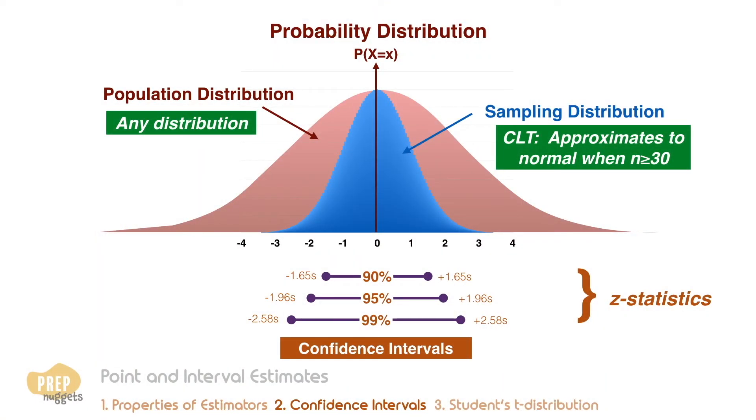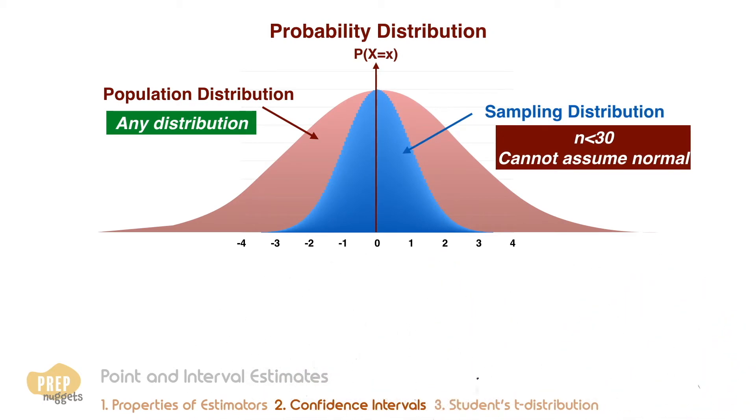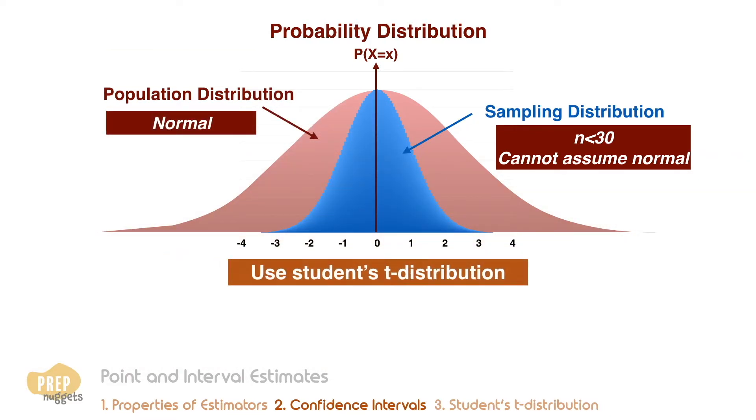In the event that the sample size is less than 30, we cannot assume that the sampling distribution is normal. As such, we cannot use Z statistic to solve for the confidence interval. However, if the underlying distribution is normal, the student's T statistic can be used.